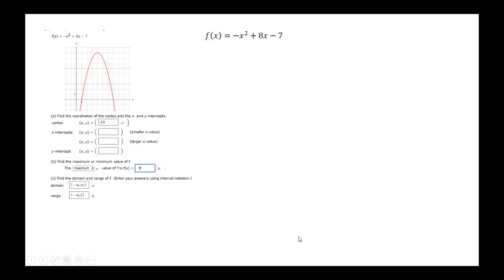We are asked to find the coordinates of the vertex and the x-intercept for the function f(x) equal to minus x squared plus 8x minus 7.